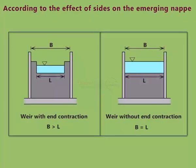According to the effect of sides on the emerging nap, wares are classified as Wares with End Contraction and Wares without End Contraction.